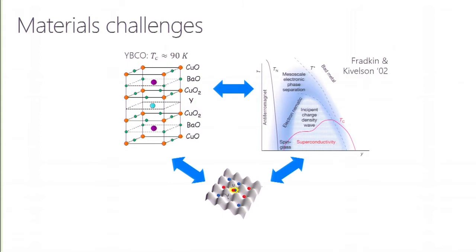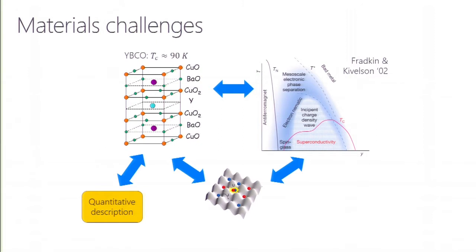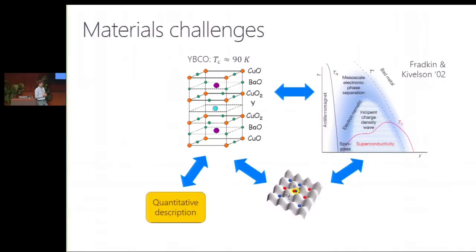There are two different ways you could go about this. One way, which is in a sense the more popular one in condensed matter theory, is to look at this complicated system and say maybe it's only these copper oxide layers that matter. So you reduce this complicated system to something much simpler, like the Hubbard model in two dimensions, and then you try to solve that. But what we were hoping to get to is that looking at the Hubbard model could maybe explain the structure of the problem and the pairing mechanism, but it doesn't tell you a lot about the detail of a particular material or how to improve material parameters.